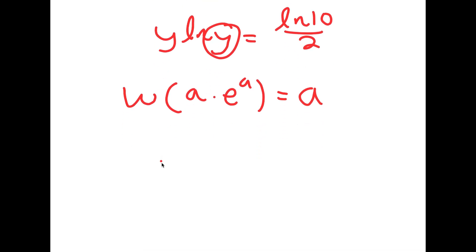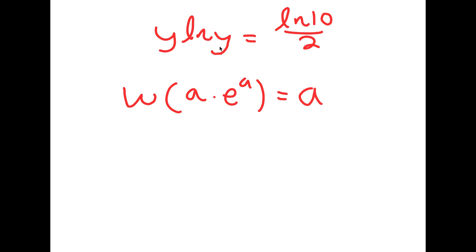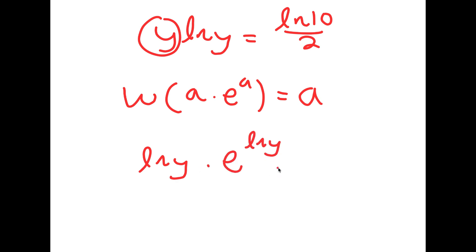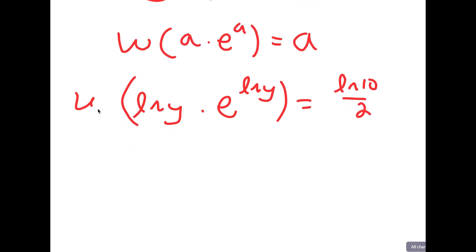So y, I'm going to rewrite as e to the power of ln of y. And now I have ln y times e to the power of ln y is equal to ln 10 over 2. If I take the Lambert W function on both sides, this simply equals ln y.